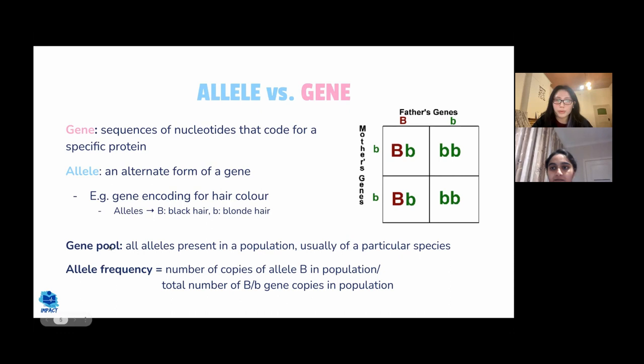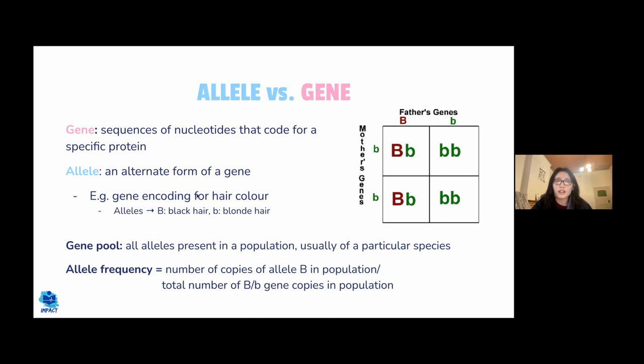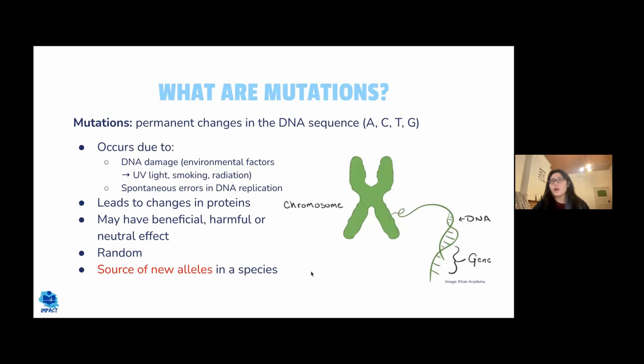A gene pool refers to all the alleles present in a population. For hair colour, that would include alleles for black, blonde, red, brown, and all other hair colours. Allele frequency refers to the frequency of a specific allele — for instance, to find the frequency of the black hair allele, you count all black hair alleles and divide by the total number of all hair colour alleles.